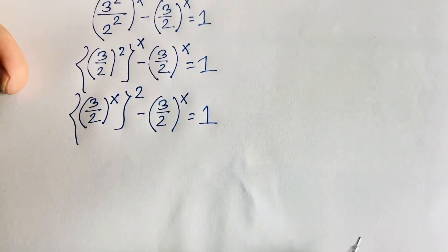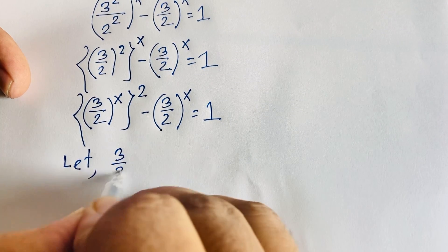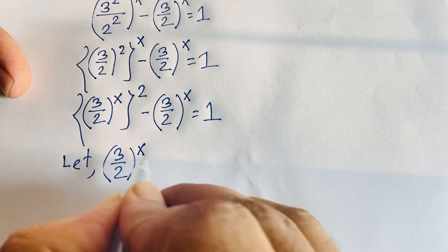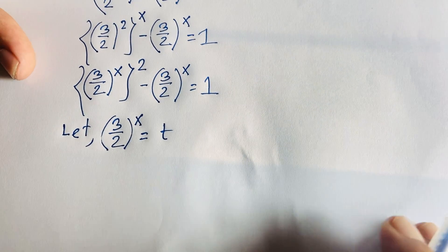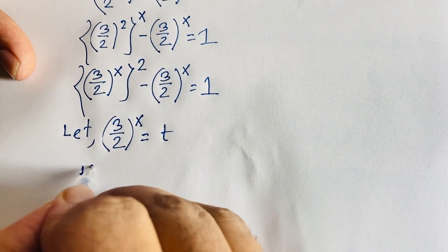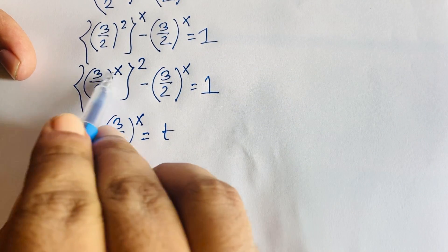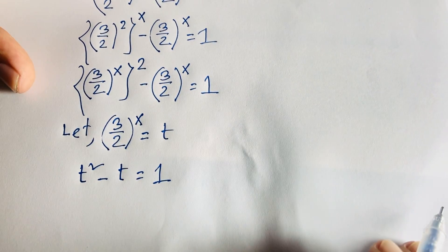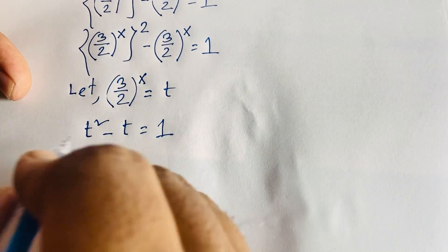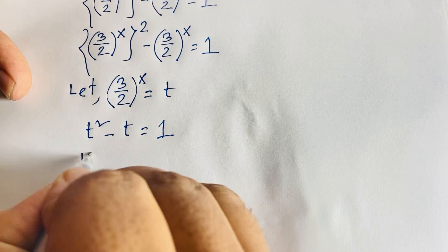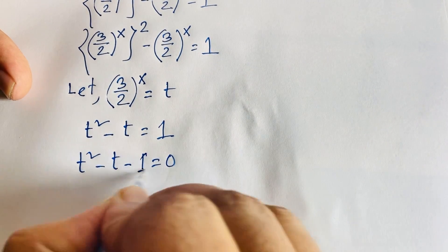Let t equal (3/2)^x. Then the equation becomes t squared minus t equals 1, or rearranging, t squared minus t minus 1 equals 0. This is a quadratic equation.